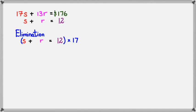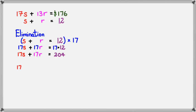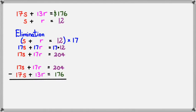Everything inside that blue bracket has to be multiplied by 17. So we get 17 times S, plus 17 times R, equals 17 times 12 — simplifying to 17S plus 17R equals 204. Writing both equations next to each other and subtracting: 17S minus 17S cancels, 17R minus 13R gives us 4R, and 204 minus 176 gives us 28. So R equals 28 divided by 4, which means R equals 7.